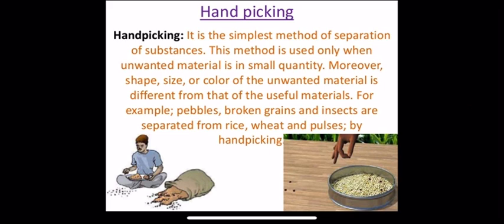For example, pebbles, broken grains and insects are separated from rice, wheat and pulses by handpicking. You can see your mother separating unwanted materials from the grains of rice or pulses when she is cooking food. This process is called handpicking.